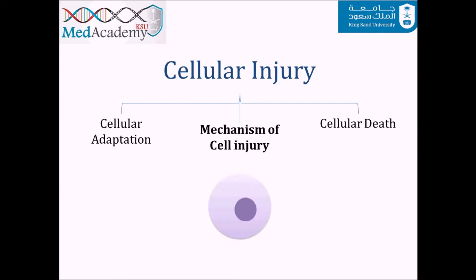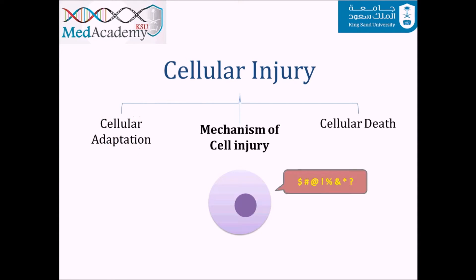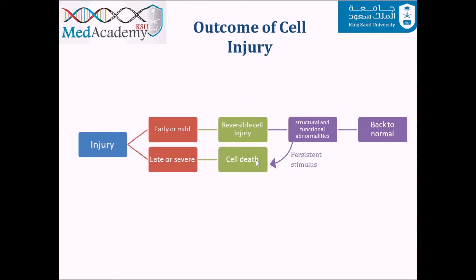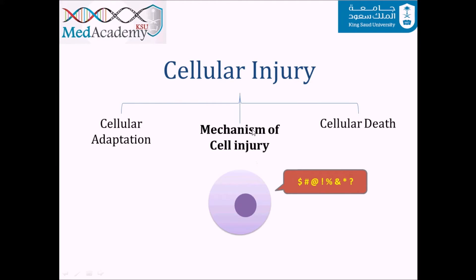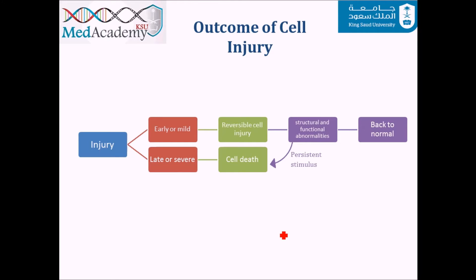Cellular injury happens when a cell is severely stressed beyond adaptation, or when it has intrinsic abnormalities in its own DNA or proteins. This can be reversible, but if it is severe enough it might end up with cellular death. It's essential to look at the outcome of cell injury.